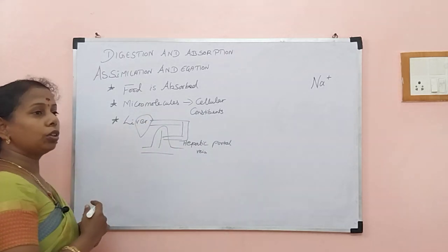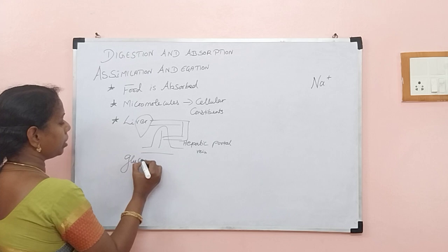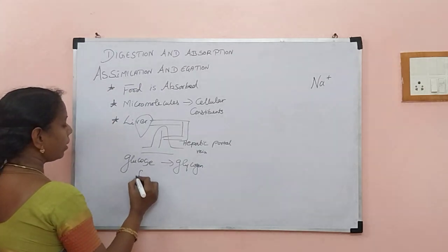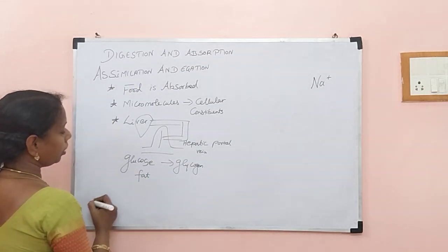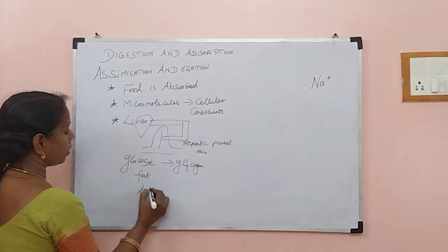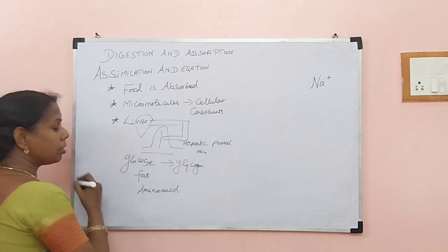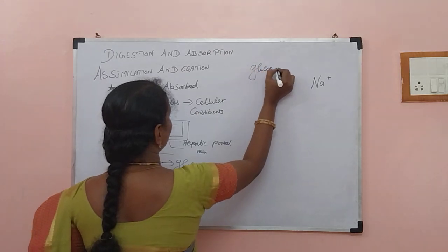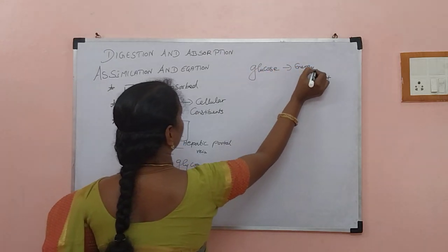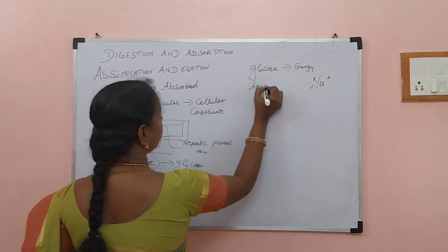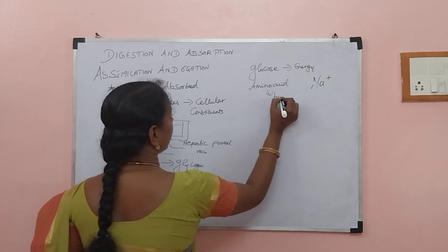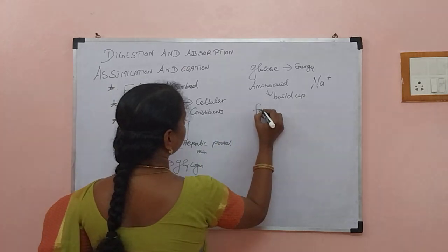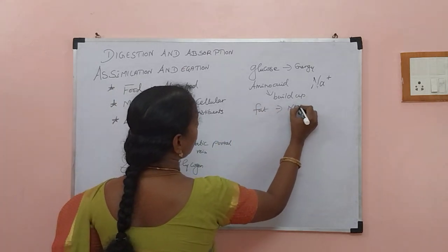In the liver, glucose is converted into glycogen and reserved. Fats are also reserved. And amino acids are also reserved. Later on, if you need energy, glucose will give us energy. Amino acids join together and form proteins, helping to build up cellular components. The fat components also give us more energy.